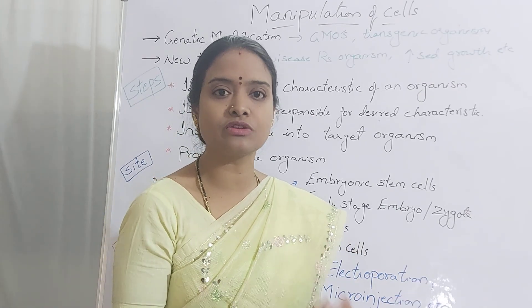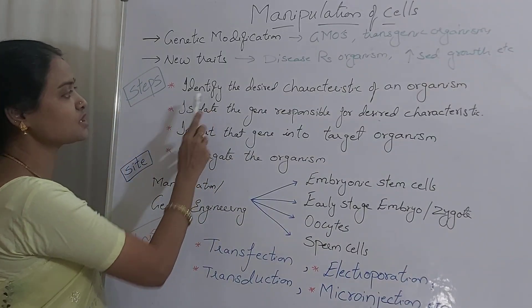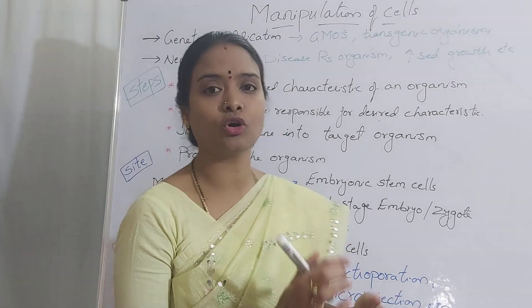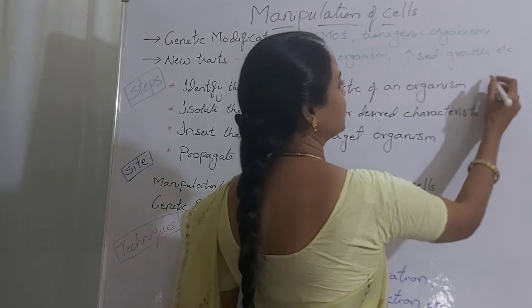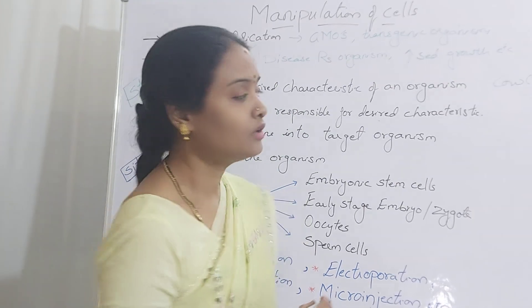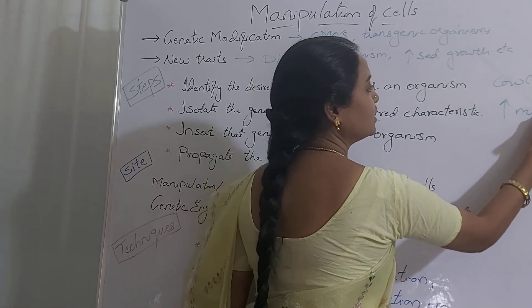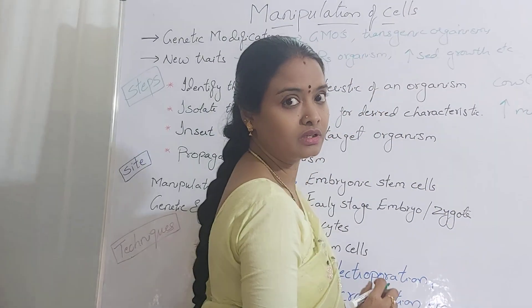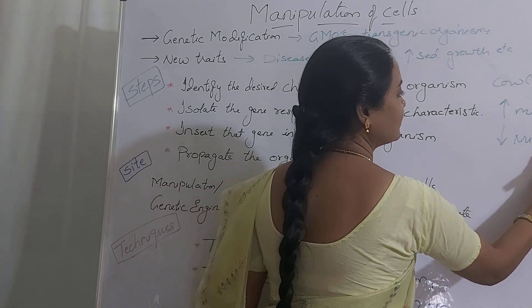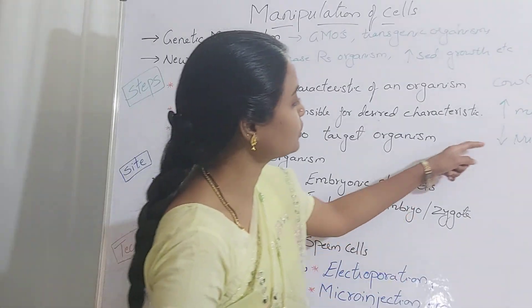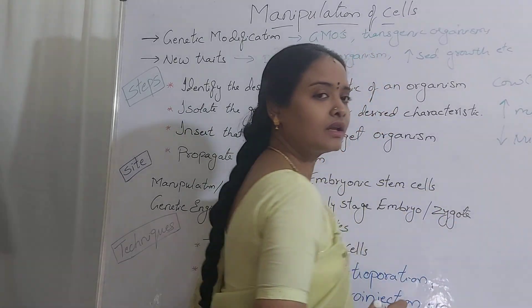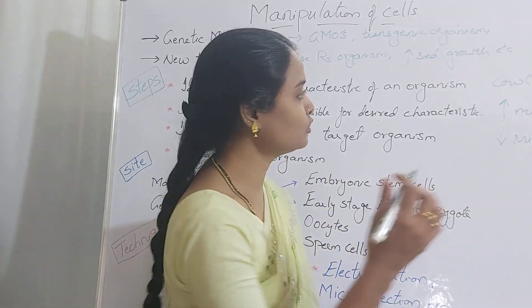There are four main steps involved in manipulating a cell. The first step is identifying the desired characteristic of an organism. For example, take a cow — Trait 1 has increased milk production, producing more than 10 liters of milk, but its nutrient quality is low.